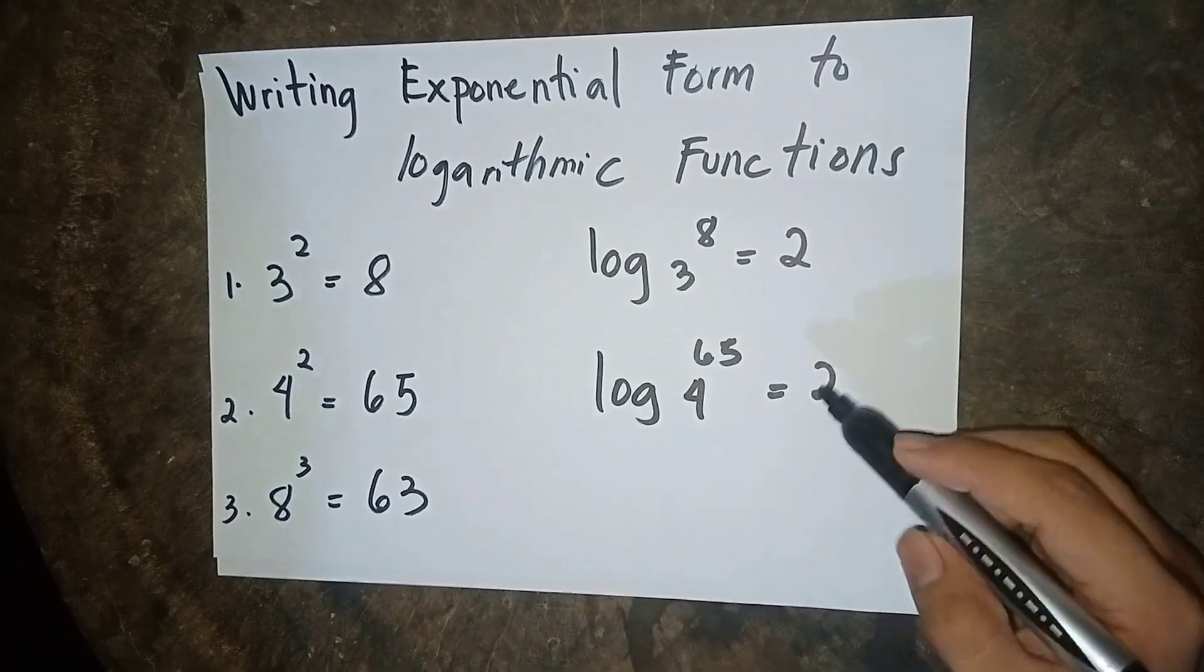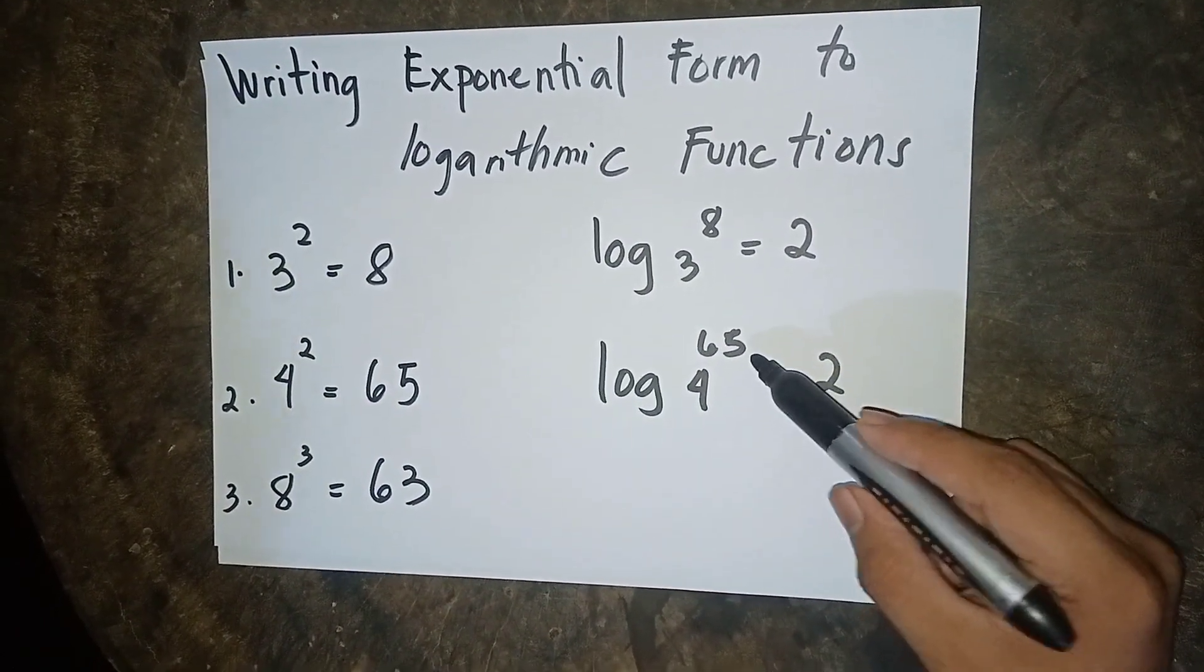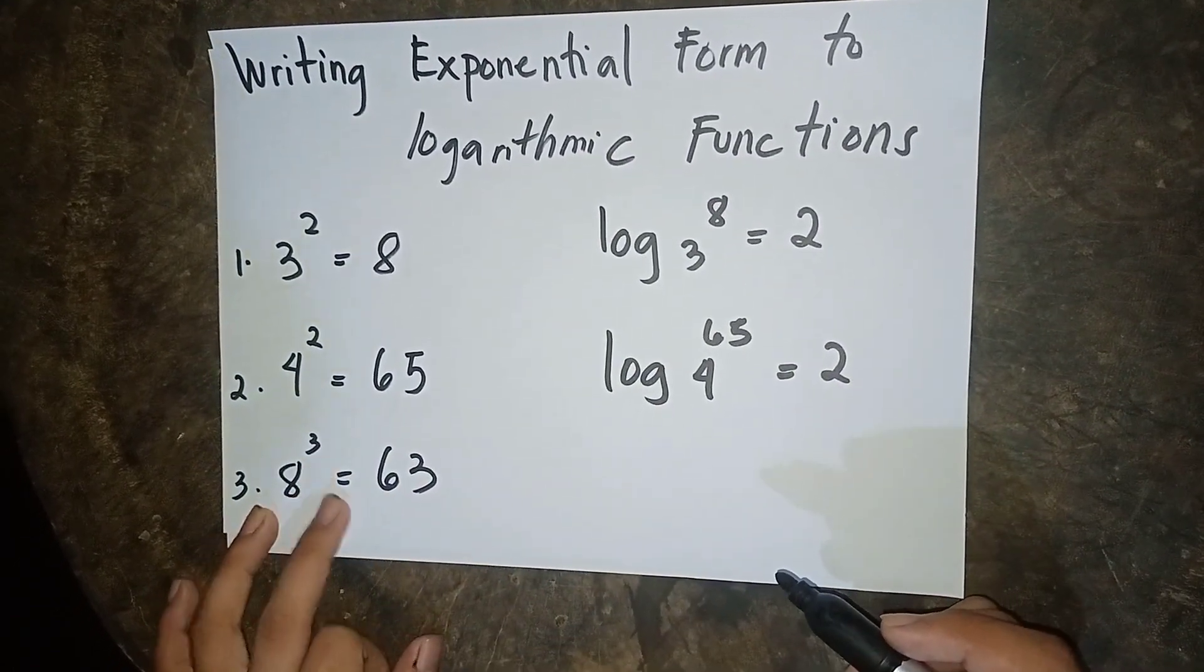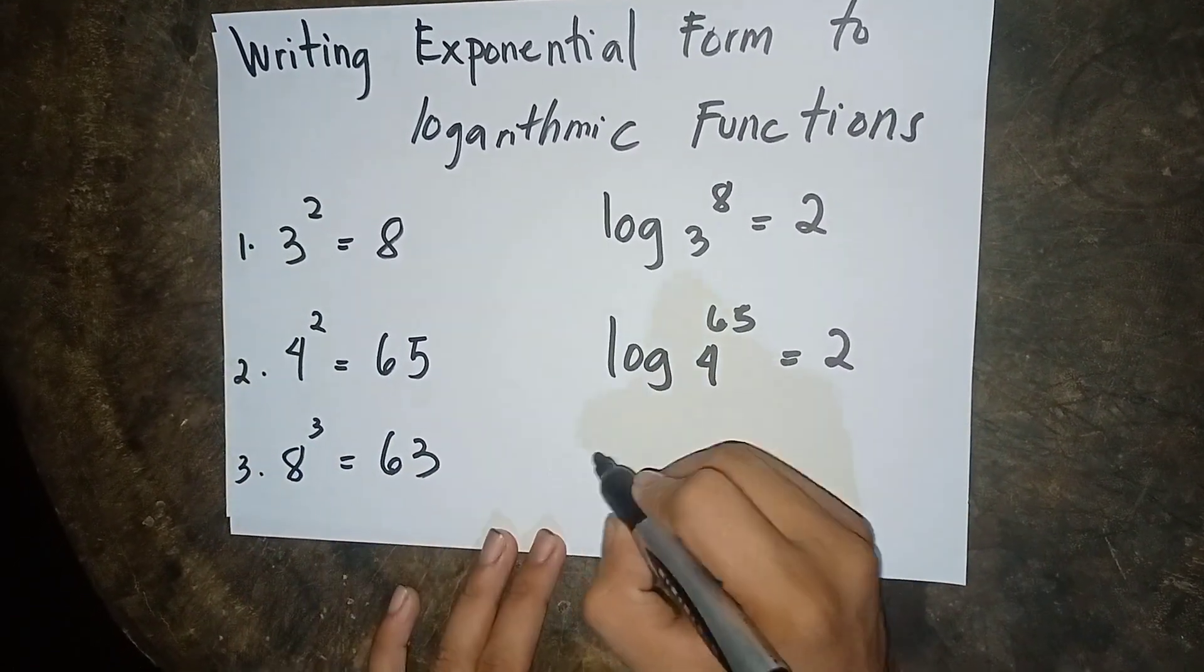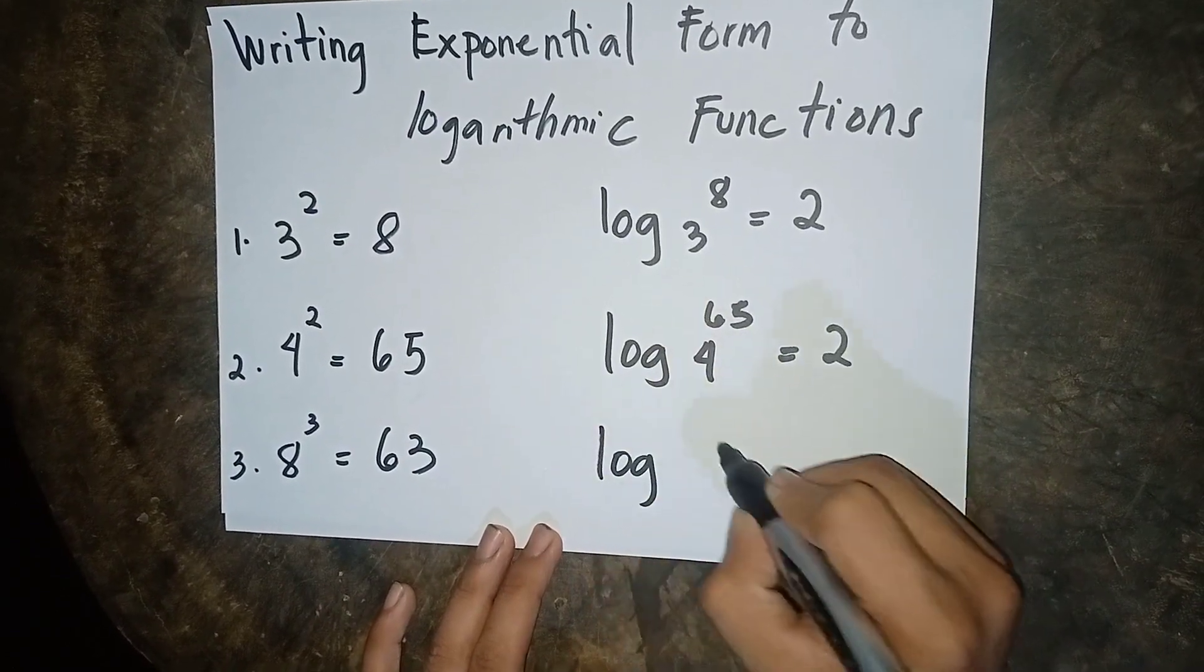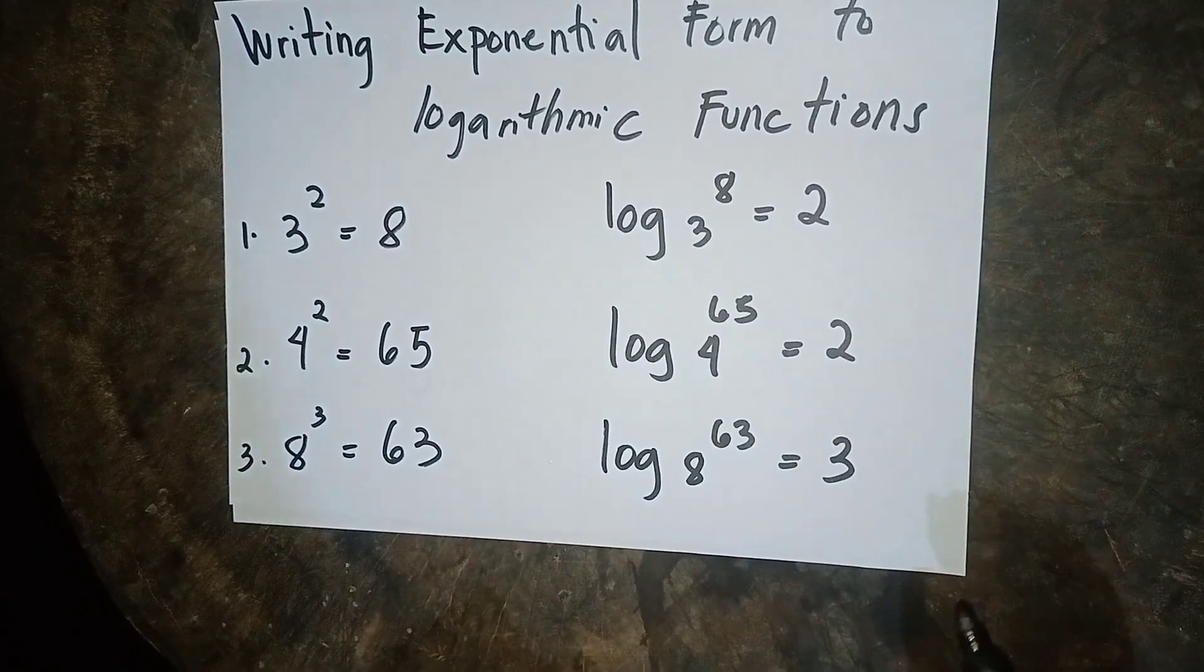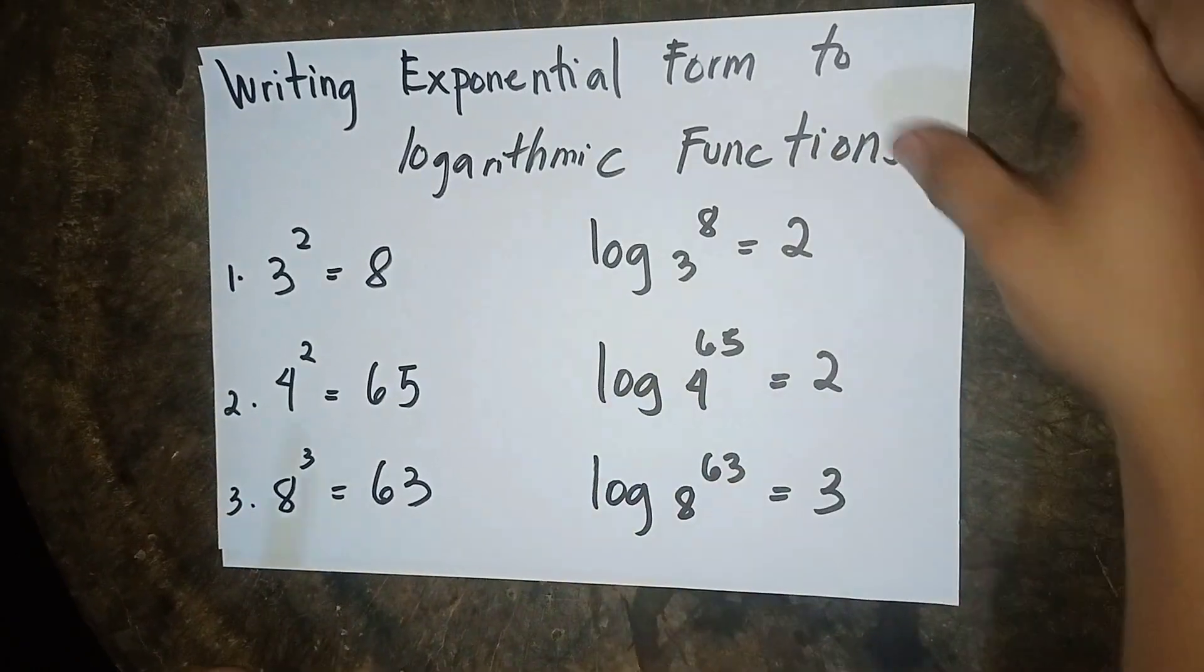Sorry for writing of 65. So number 3 is 8 to the power of 3 is equal to 63. So our answer is log of 63 base 8 is equal to 3.